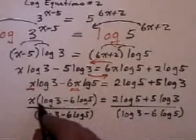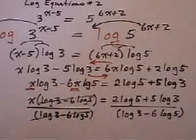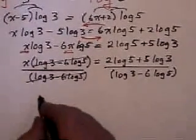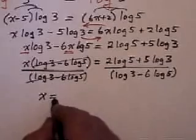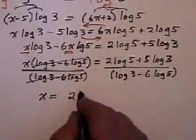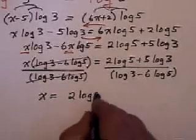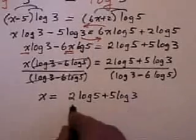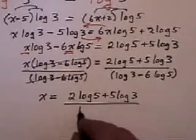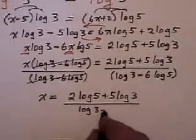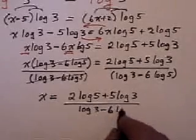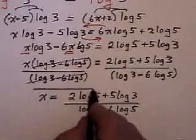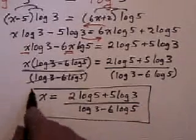Okay. So finally what we're going to be left with is x all by itself. And we have 2 log 5 plus 5 log 3, all divided by log of 3 minus 6 times log of 5. And there's your answer.